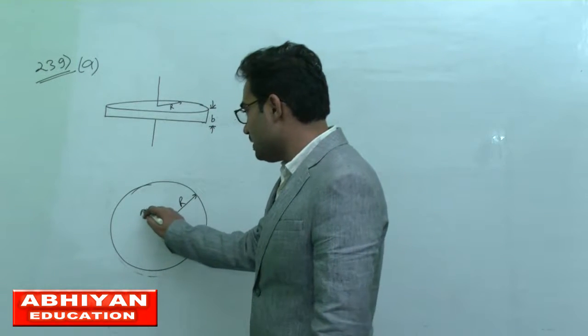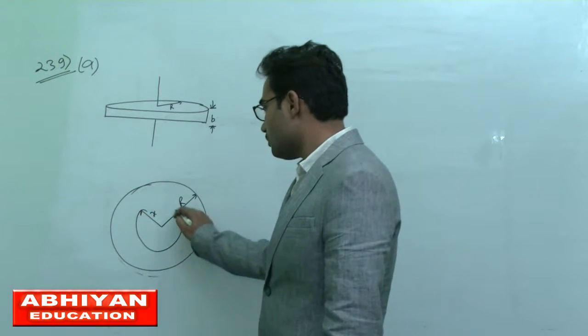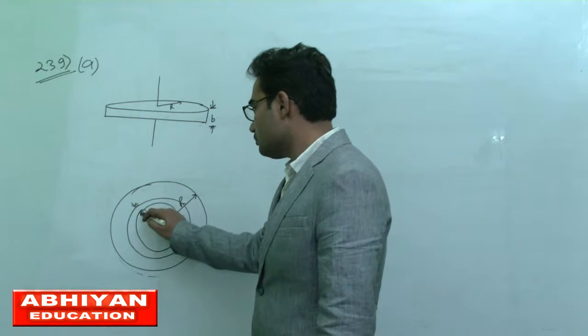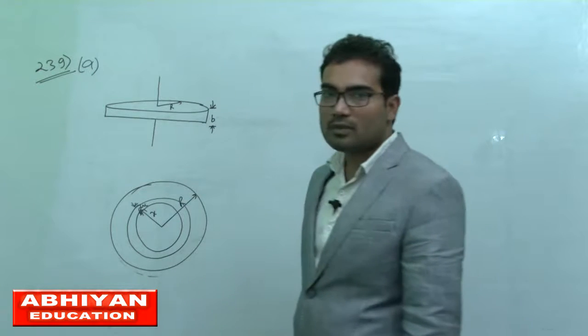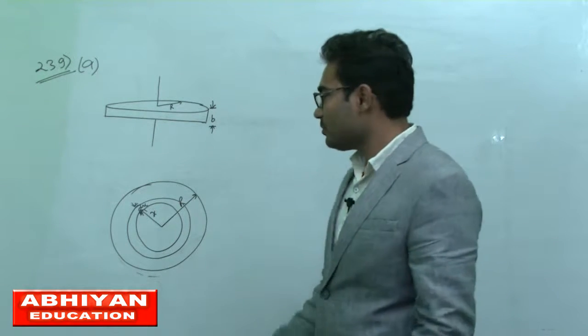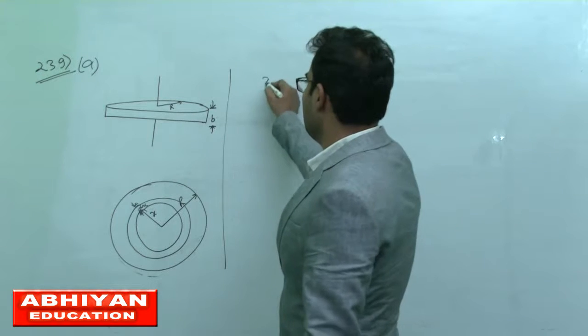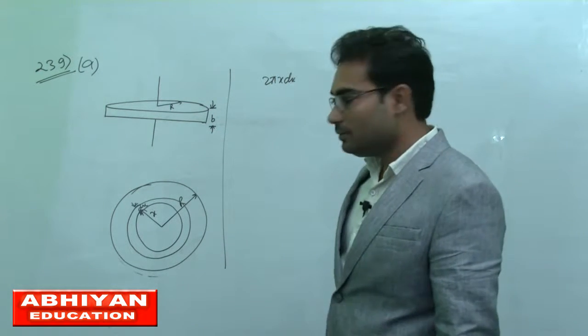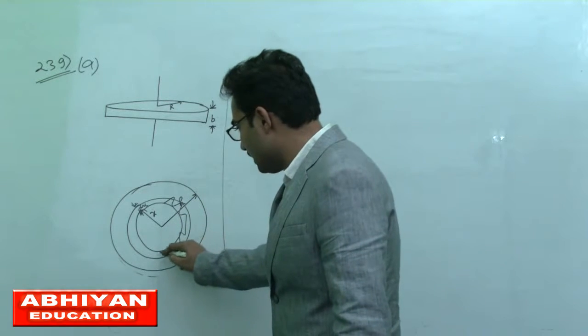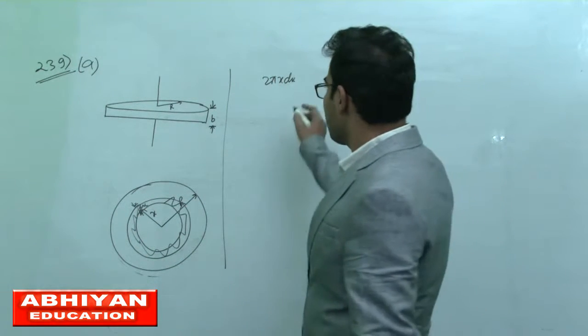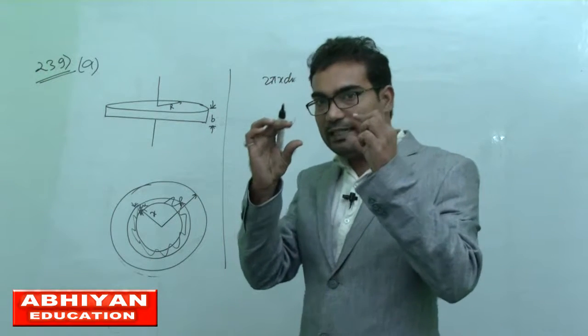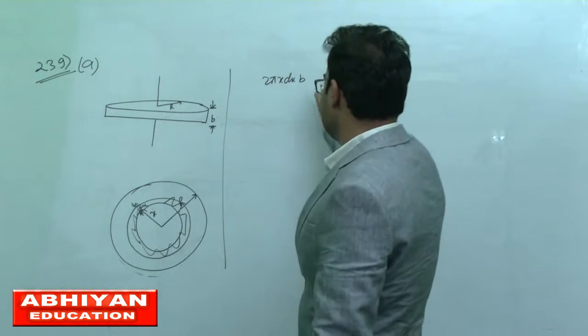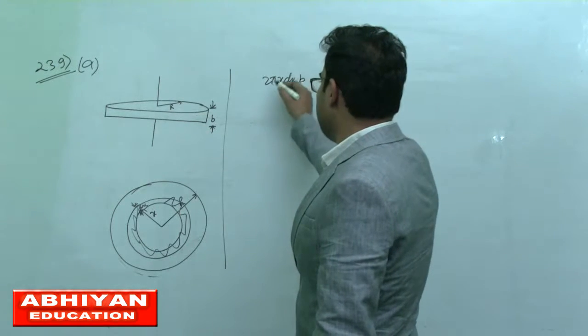At distance x from the center, consider a ring element of thickness dx. The area of this ring is 2 pi x dx. This ring's volume is 2 pi x dx times b, where b is the thickness.